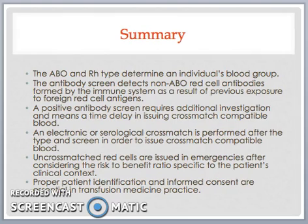In summary, the ABO and RH type determine an individual's blood group. The antibody screen detects non-ABO red cell antibodies formed by the immune system as a result of previous exposure to foreign red cell antigens. A positive antibody screen requires additional investigation and means a time delay in issuing cross-match-compatible blood. An electronic or serological cross-match is performed after the type and screen in order to issue cross-match-compatible blood. Uncross-matched red cells are issued in emergencies after considering the risk-to-benefit ratio specific to the patient's clinical context. Proper patient identification and informed consent are essential in transfusion medicine and clinical practice. This concludes Practical Transfusion Medicine Part 1 on blood typing, antibody screen, and cross-match.